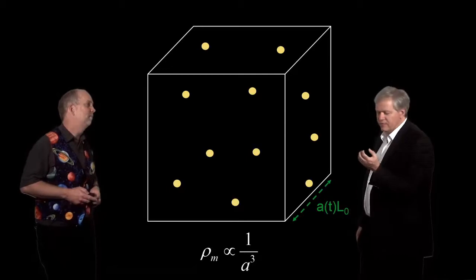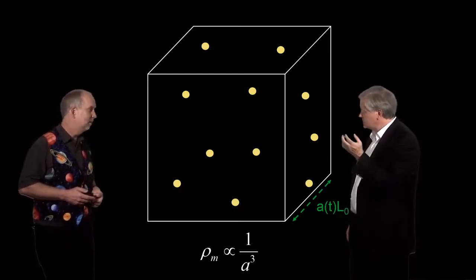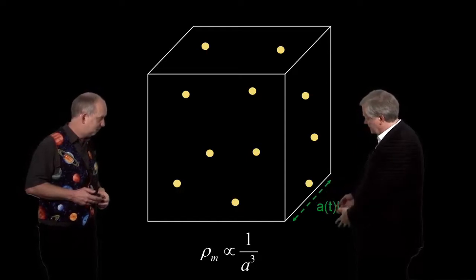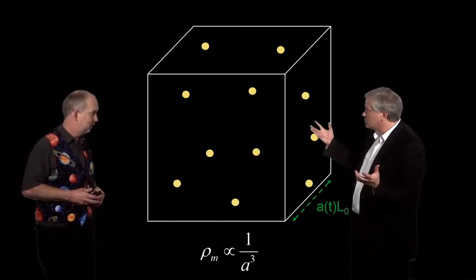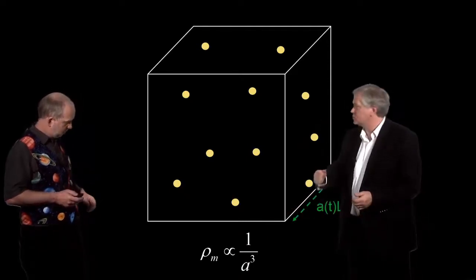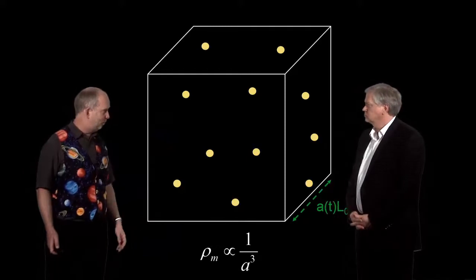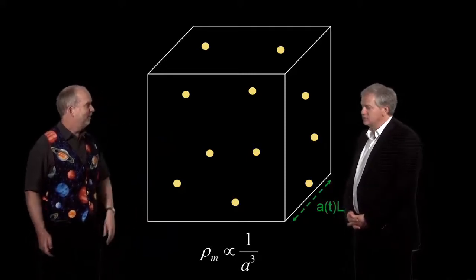If you think you've got ten atoms in a box, they have a density, or they have a mass, and then the box gets A³ larger in volume, so the density is going to drop as A³. So this is pretty straightforward. The density just goes as 1 over A³. No problem. Problem solved. We're done.